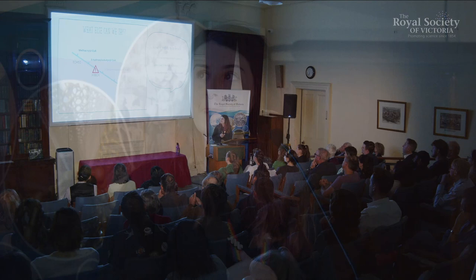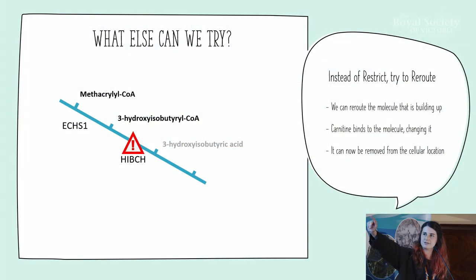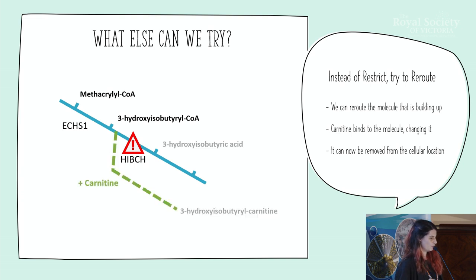So just a bit of insight here. In HIBCH deficiency, loss of the HIBCH enzyme there in red causes a buildup of these two metabolites with very long names. But there's another way we can remove at least one of them. So there's a compound called carnitine that's able to combine with that middle metabolite and change its structure, allowing it to be removed and transported elsewhere out of the particular cellular compartment.